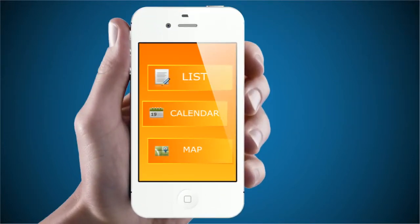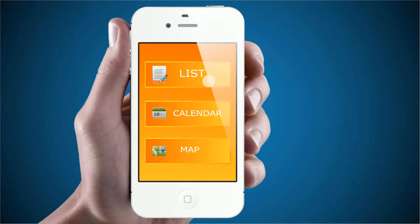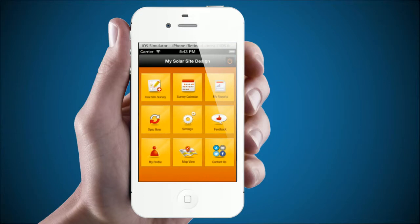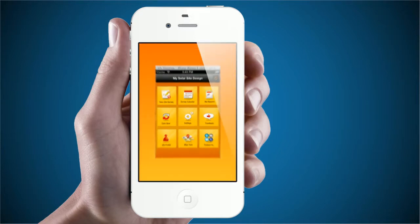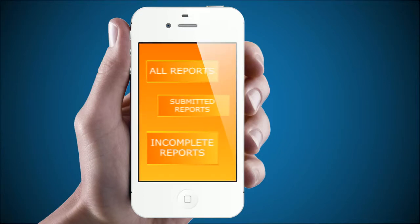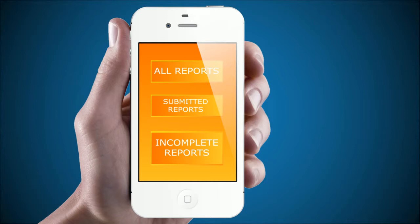You can view the surveys you have submitted in three ways: by calendar, list, or map. You can always access your reports in the My Reports section of the app. If you haven't submitted your project yet, no need to worry — all of your information is still stored in incomplete reports.